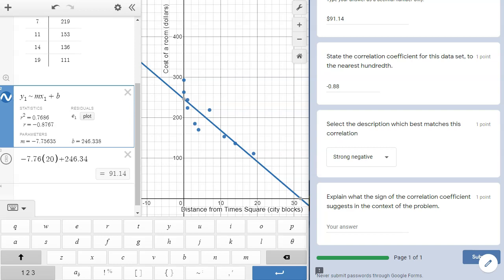Finally, the last part asks us to explain what the sign of the correlation coefficient suggests in the context of this problem. Well, a negative correlation in general means that as x increases, y decreases. In the context of this problem, there is a negative or inverse relationship between x, the distance from Times Square, and y, the hotel cost. Put another way, as the distance from Times Square increases, the hotel room cost decreases.